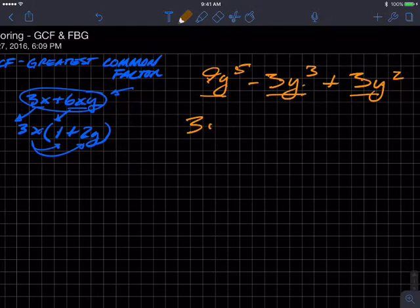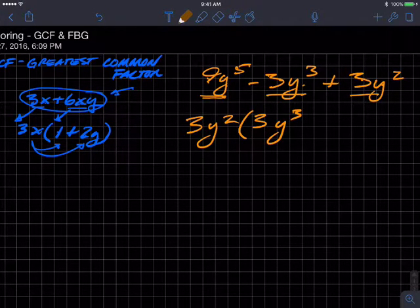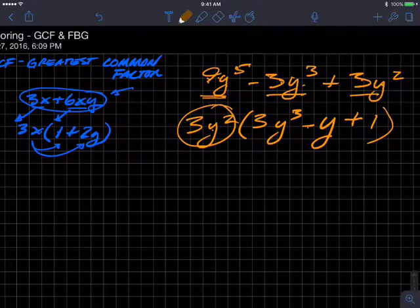3 goes into each of these coefficients, and y squared goes into each of these variable portions of each term. So I'm going to factor out a 3y squared. It leaves us 3y cubed, because y squared times y cubed is y to the fifth. For this second term, it leaves us a negative y, because 3y squared times negative y is negative 3y cubed. And 3y squared divided by 3y squared is just 1. So this is factoring out the greatest common factor for each of these three terms.